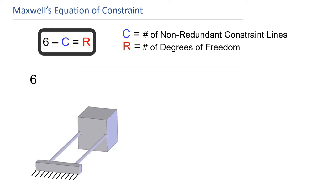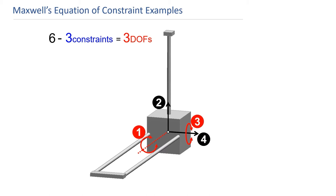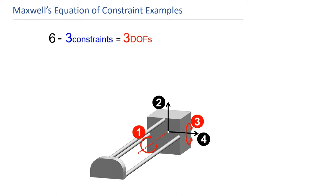Consider the following example demonstrating this equation. The mechanism stage is constrained by two wire flexures and, according to Maxwell's equation, we would expect the mechanism to achieve four degrees of freedom — which it does. Its four degrees of freedom are shown animated here using modal analysis. If we added a third wire to the system, it would eliminate the single translation labeled 2. If we added a different third wire to the system, it would eliminate the single rotation labeled 3.